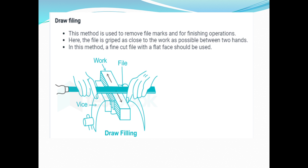Draw filing. This method is used to remove file marks and for finishing operations. Draw filing method is used for finishing purposes. The file is gripped as close to the work as possible. This method should use a fine cut file with a flat face. It is mainly used for removing file marks and finishing operations.